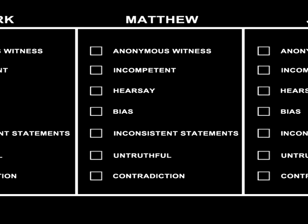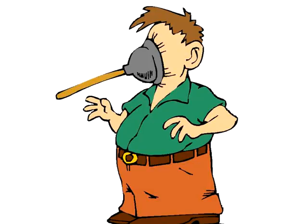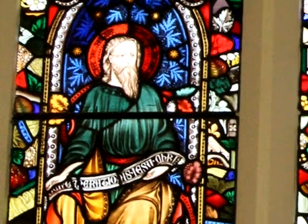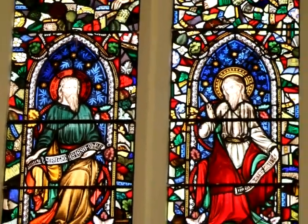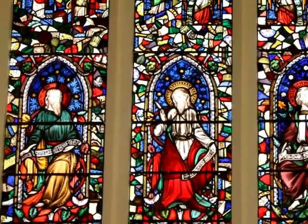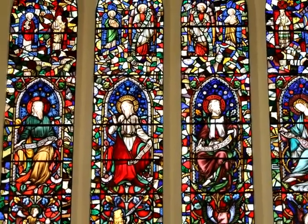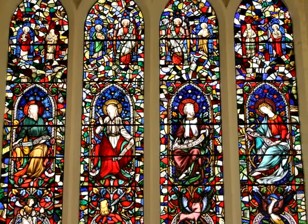One X in any one of the upper categories is sufficient to impeach the witness, and thus the witness cannot testify — period. Any evidence they may have had, whether true or not, is null and void at that point. Once we see how the Gospel authors fare, we'll examine them as a whole to see if their testimonies are generally in line with each other or not.